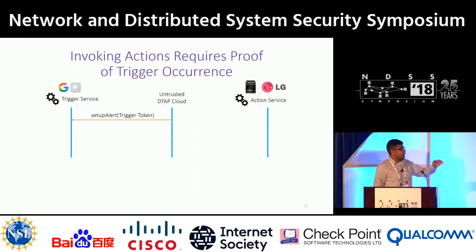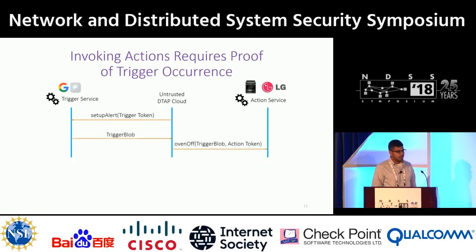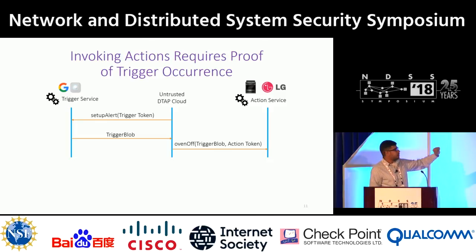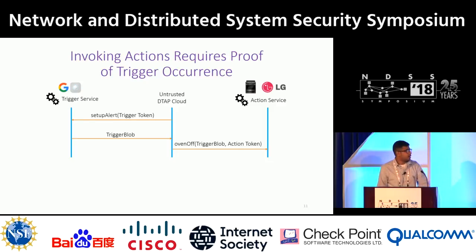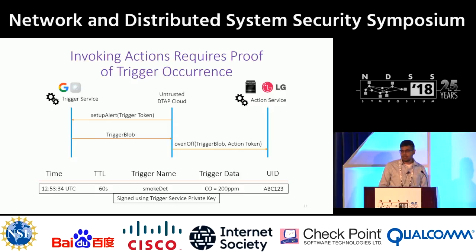At runtime, the DTAP cloud sets up a callback so that whenever there is a smoke event, the triggering service calls back into the untrusted DTAP cloud. Whenever there's a smoke event, a trigger blob is generated by the trigger service. The untrusted DTAP cloud simply forwards that and invokes the oven-off action. The trigger blob has everything needed to do a verification: the time it was minted, a time-to-live, the name of the trigger, some trigger data, and a UID — all signed using the private key of the triggering service.